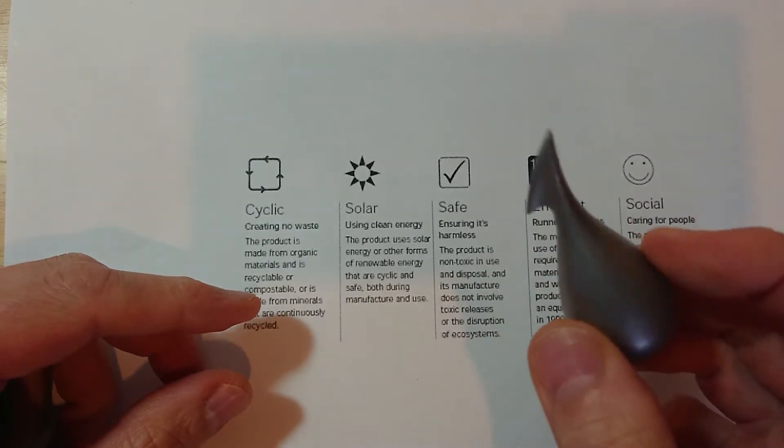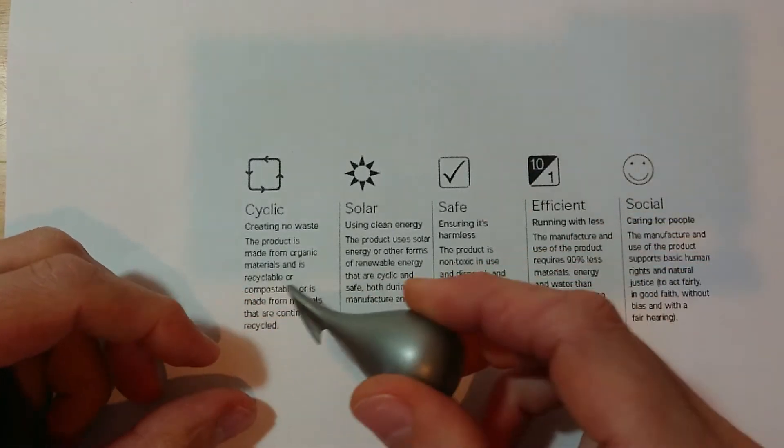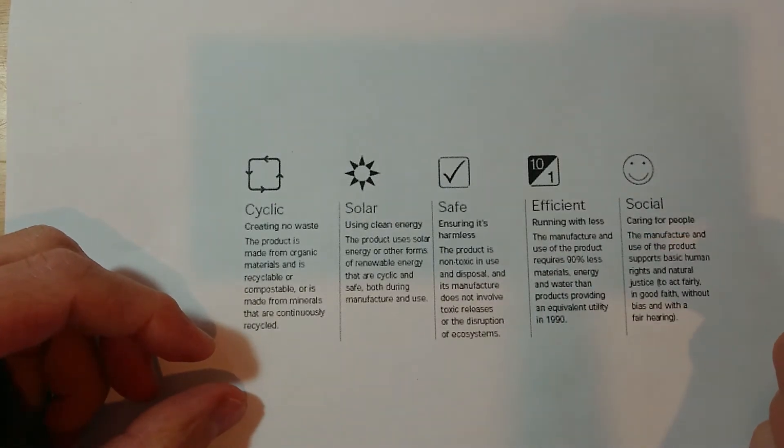This one here is an Alessi orange peeler. We're going to have a look and see how this fits in with these five principles.